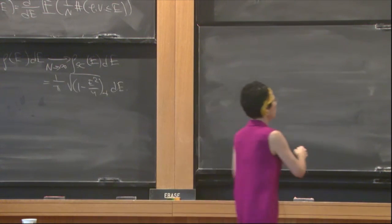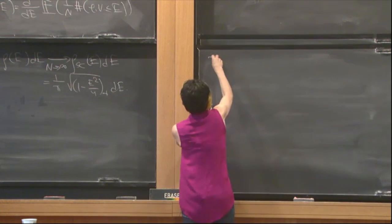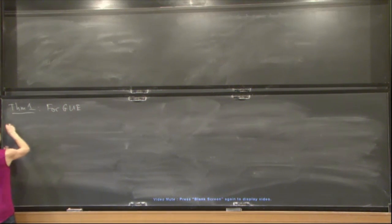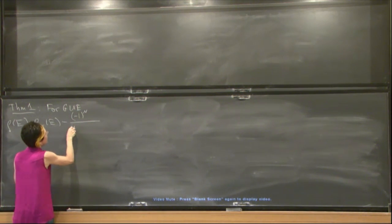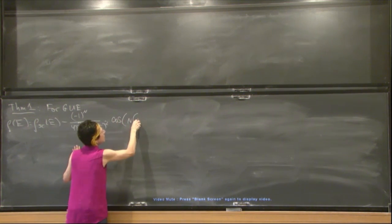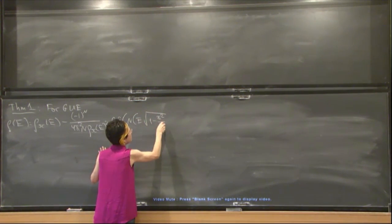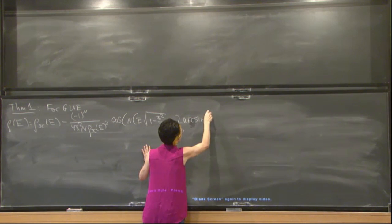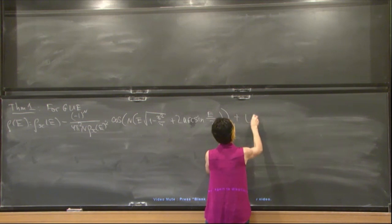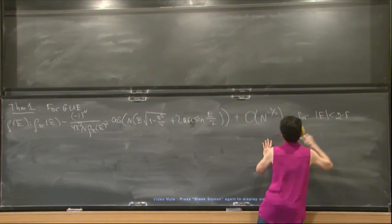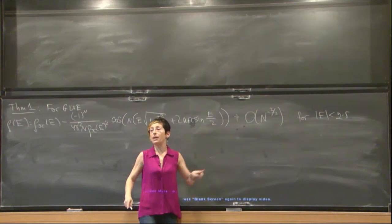The first is that for the Gaussian unitary ensemble, the density of states is the Wigner semicircle density minus (-1)^n divided by 4π square n Wigner semicircle density squared times the oscillatory term plus O of n to the minus 3 halves, and this is for the absolute value of E smaller than 2 minus δ, and the implicit constant in the notation depends only on δ.